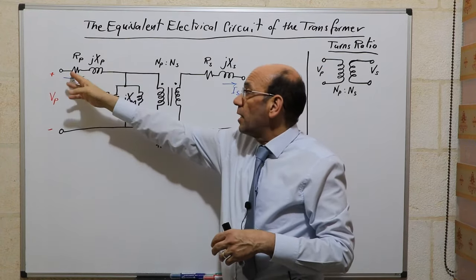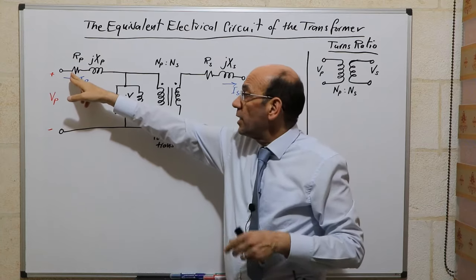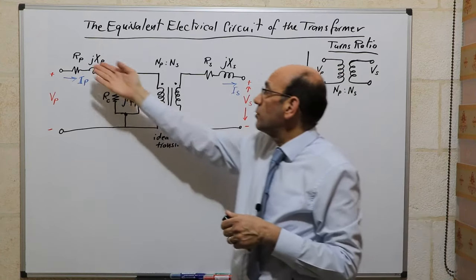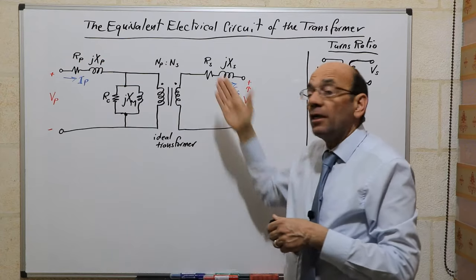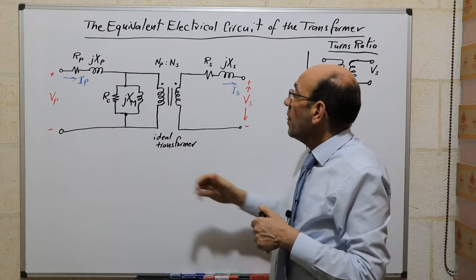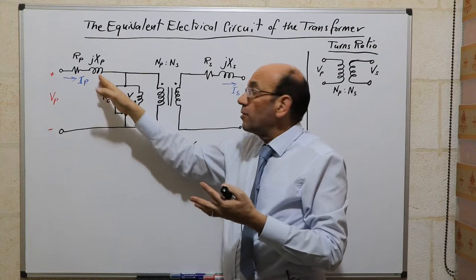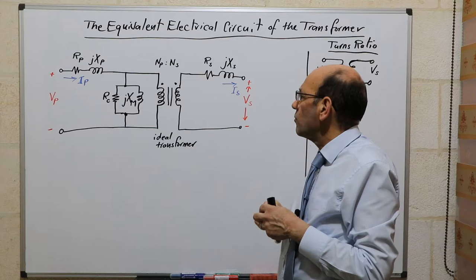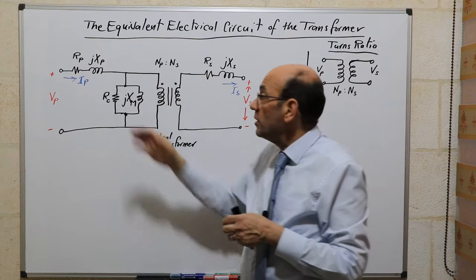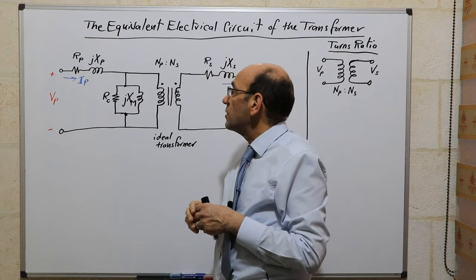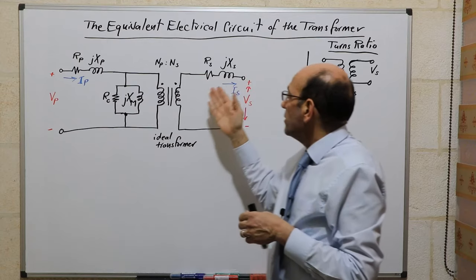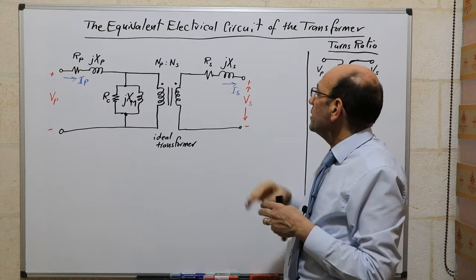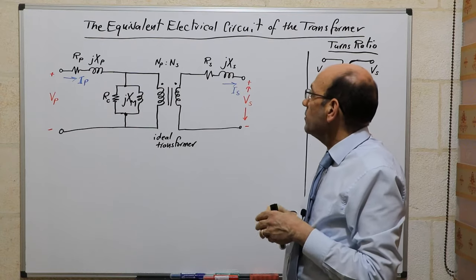We allowed for the resistance of the wires in the primary, the resistance of the wire in the secondary, and we've denoted these as R subscript P and R subscript S. We've allowed for the fact that the flux from the primary does not link the whole turns of the secondary, and we've referred to that or denoted it as Xp, and the same for the secondary. Any leakage flux is represented as X subscript S for secondary.